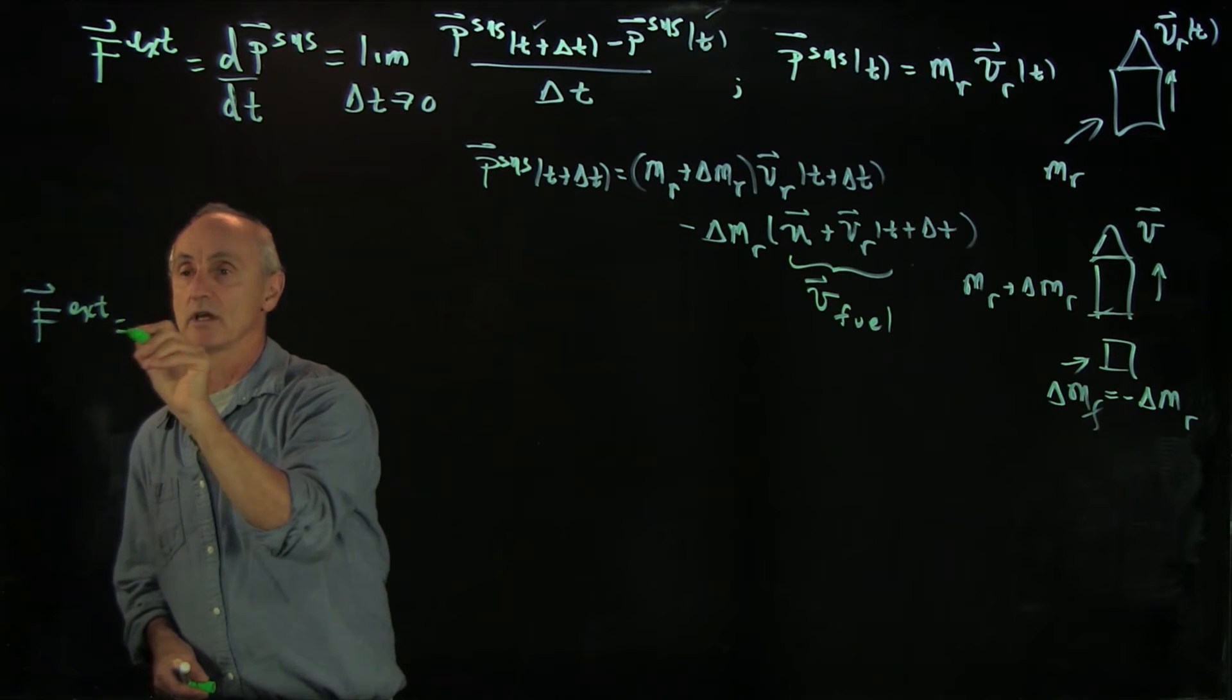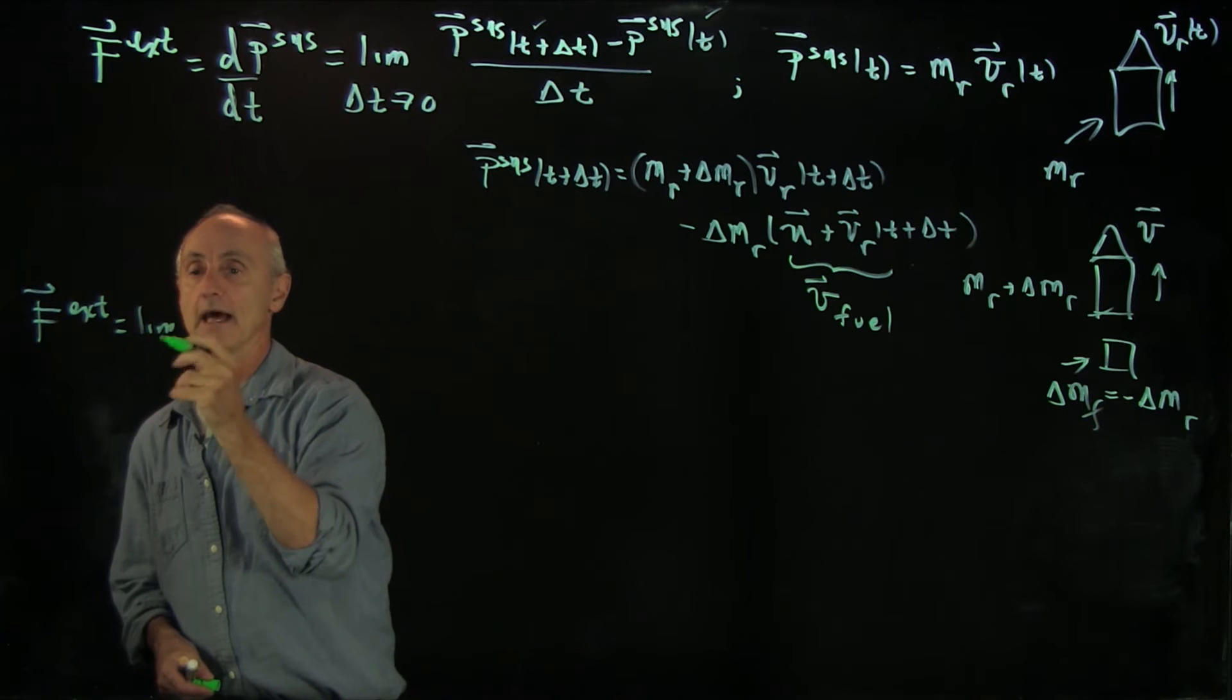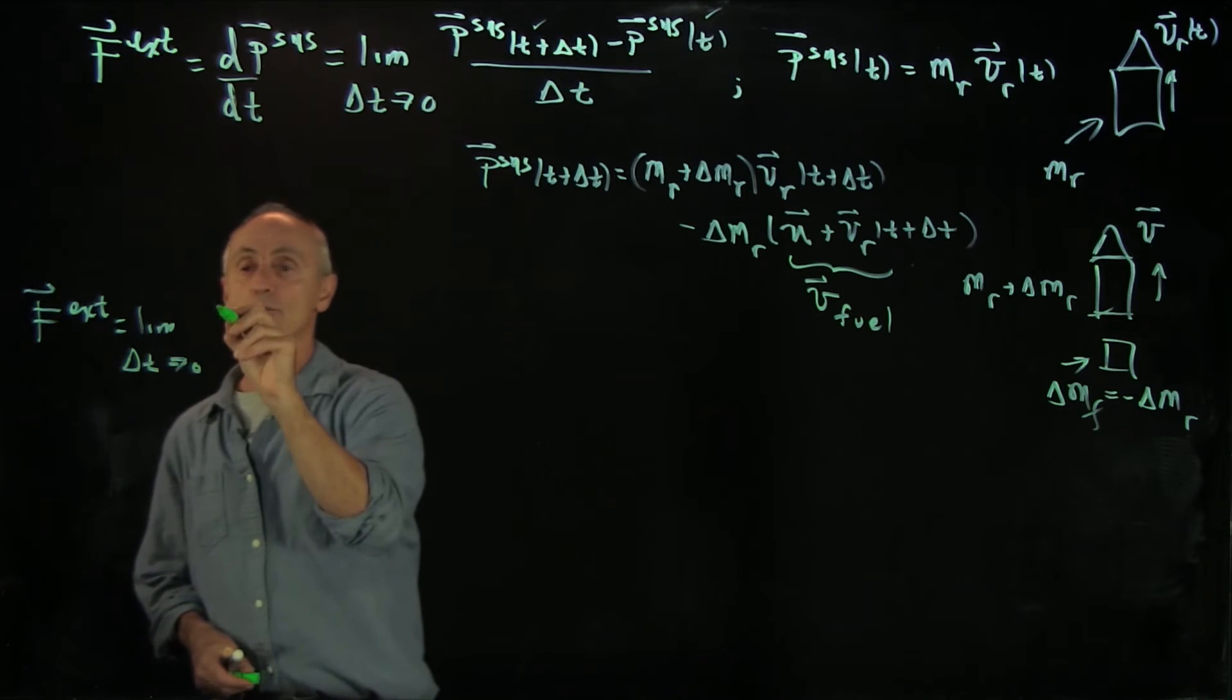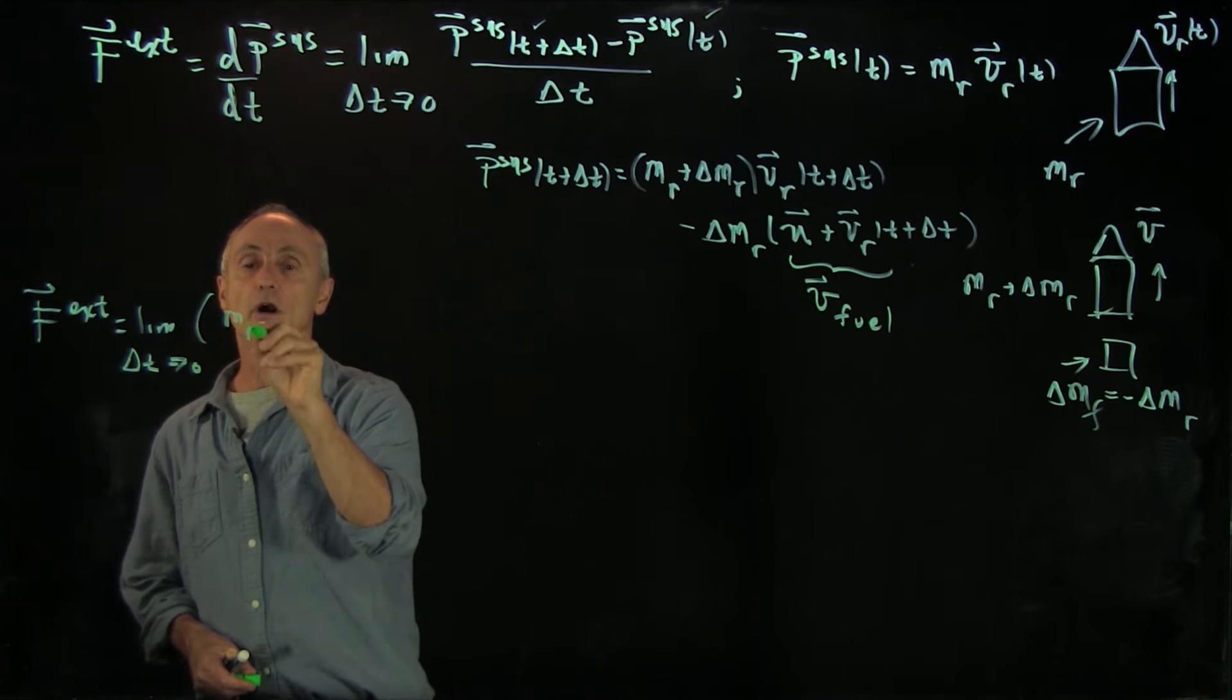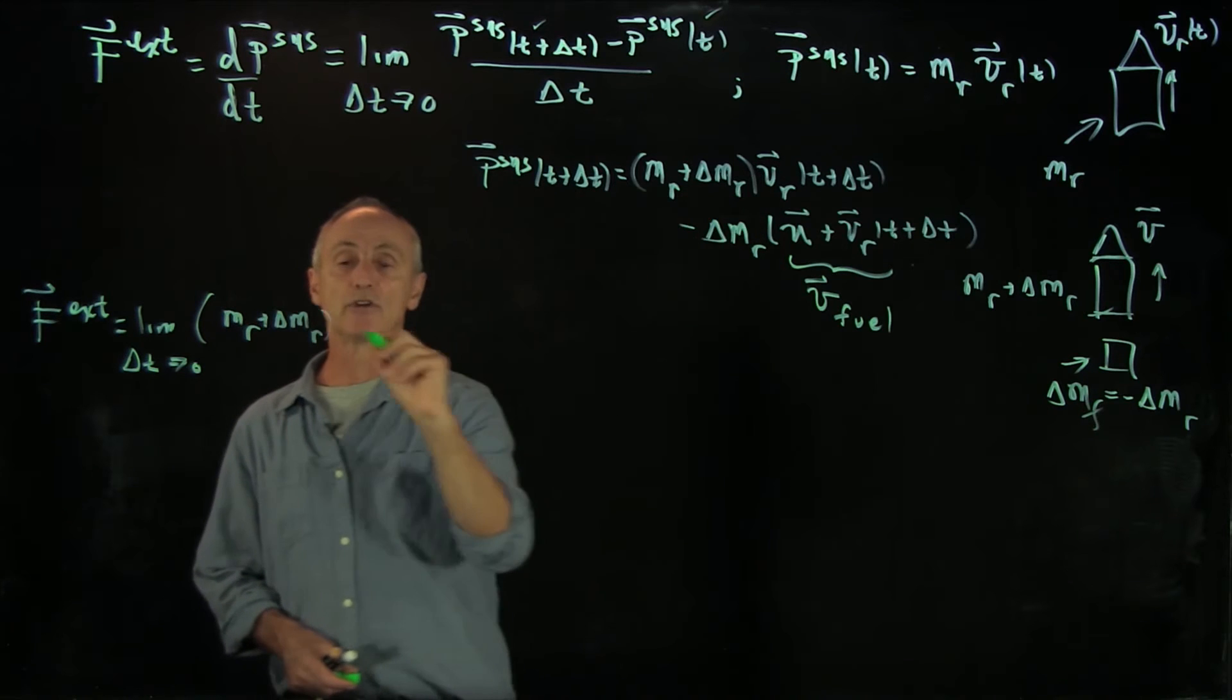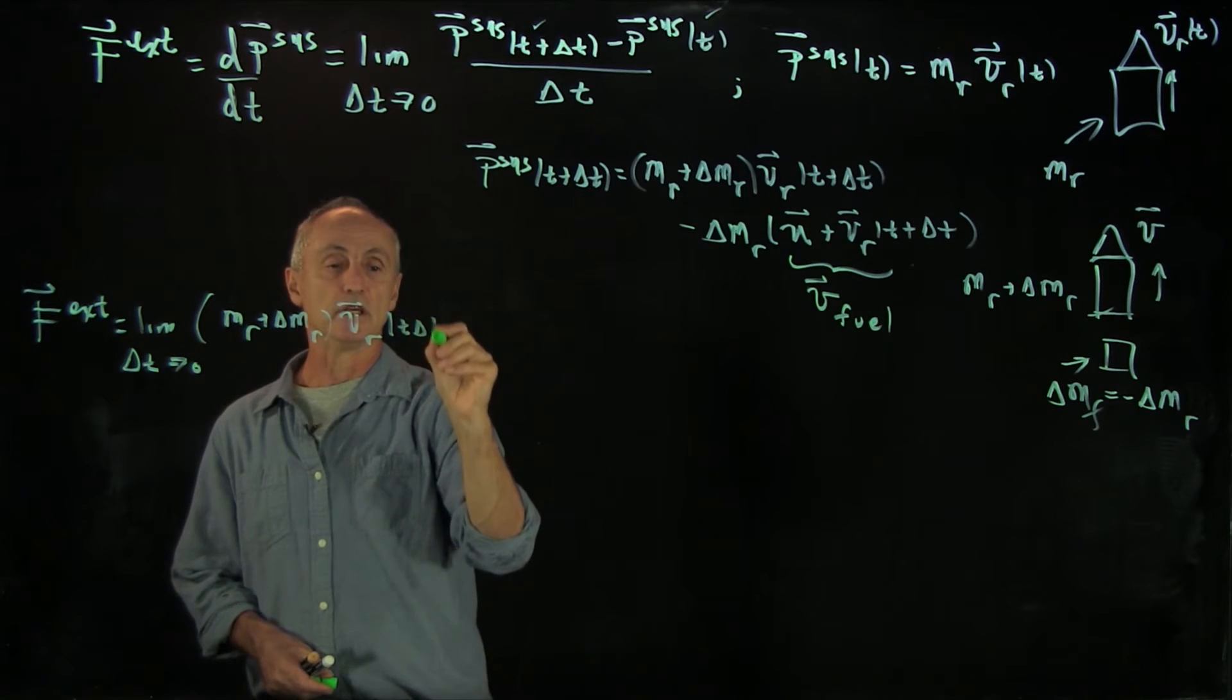So we'll write external force is the limit as delta t goes to 0. Now here, our first term is m of r plus delta mr times the velocity of the rocket at time t plus delta t.